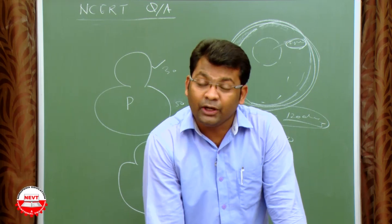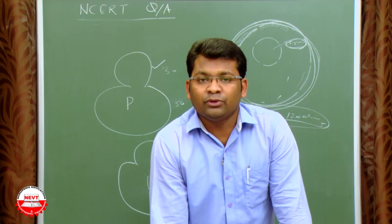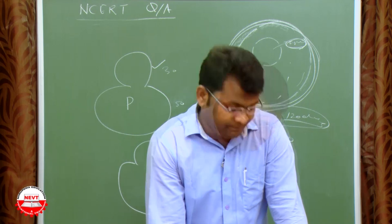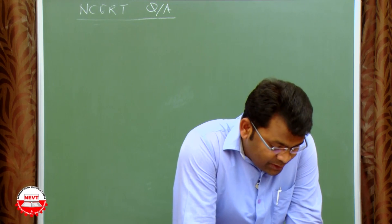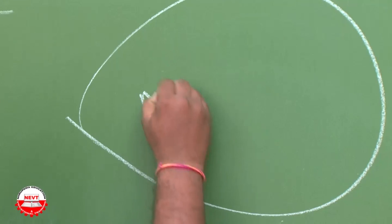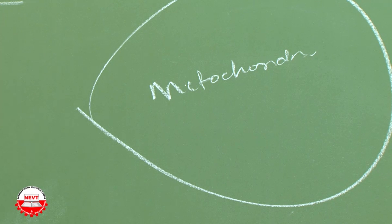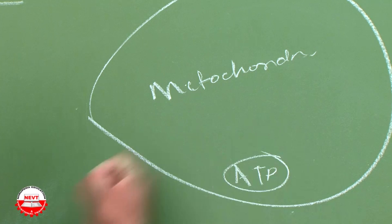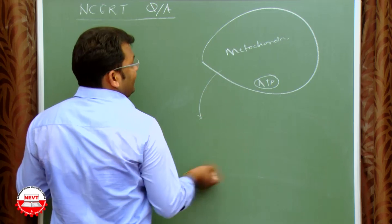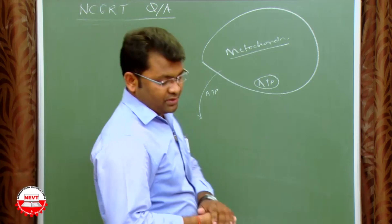What would happen if the plasma membrane ruptures or breaks down? If the plasma membrane breaks, the cytosol contents of the cell would go out into the environment and the cell would die. Next: which organelle is known as the powerhouse of the cell and why? The powerhouse of the cell is the mitochondria. Mitochondria store energy in the form of ATP (adenosine triphosphate). When the cell needs energy, it supplies ATP from the mitochondria.